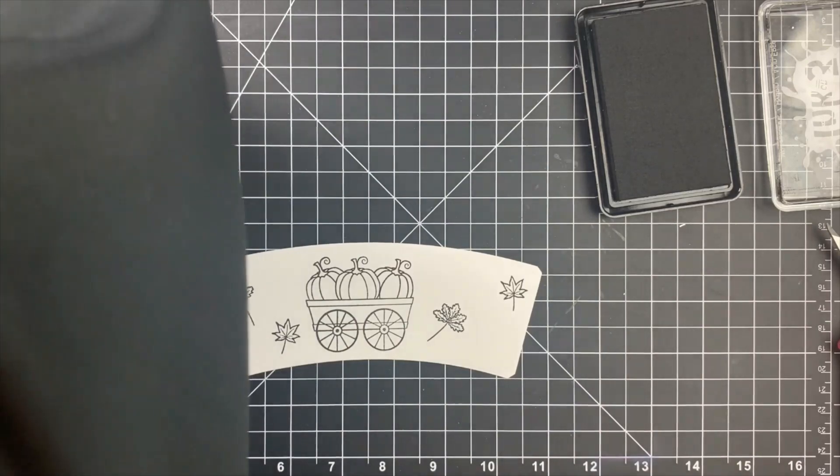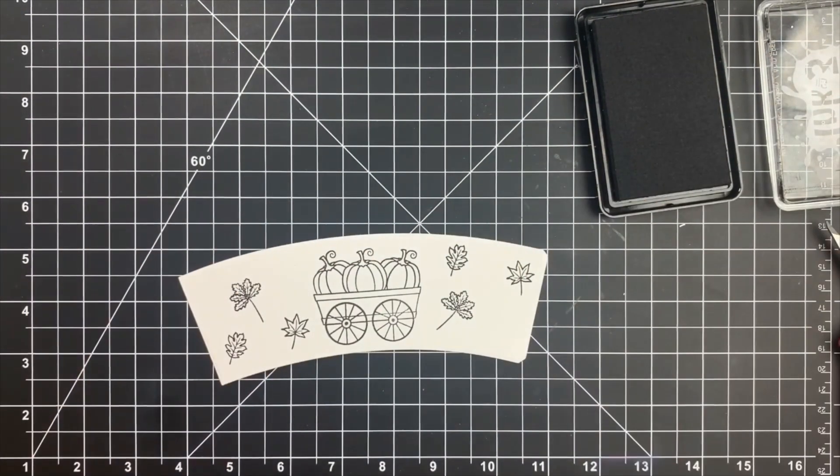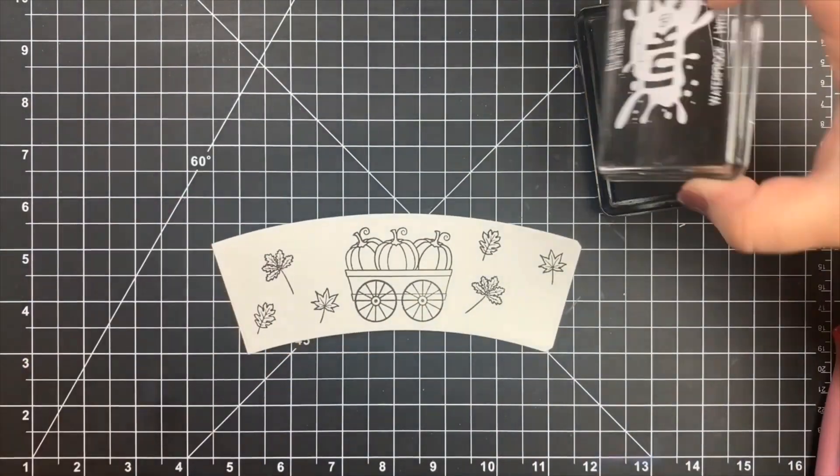Once all of my stamping was done, and by the way, this is 80-pound Neenah Solar White, and I stamped with blackout ink by InkOn3.